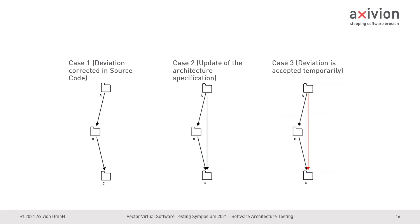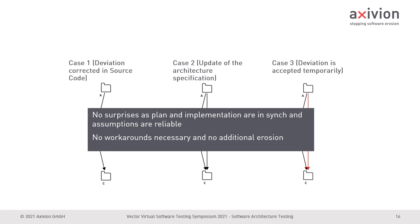So no matter if you corrected the code, updated your architecture specification, or even temporarily accepted the deviation — you will have the information available. Every developer has the information available on a day-to-day basis. The architects have the information available. And this is the big benefit of architecture testing: you can prevent bugs from happening.